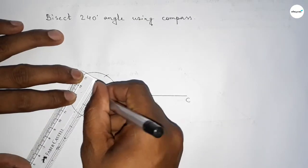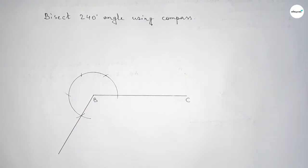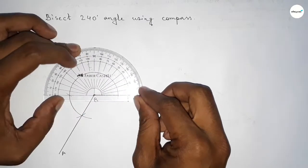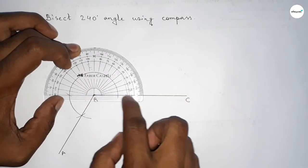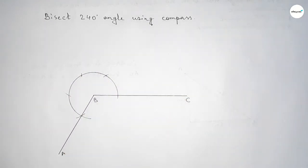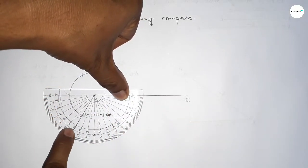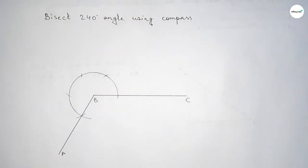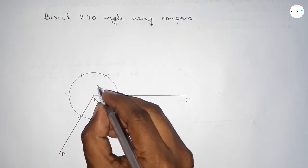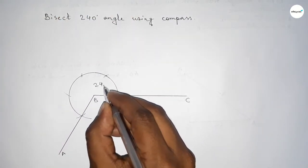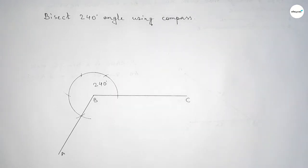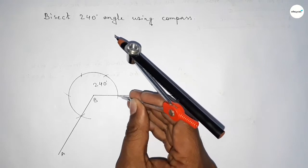Now joining this line to get the 240 degree angle, taking point A here. Checking the angle: this is 180 degrees plus 60 degrees, so 180 plus 60 equals 240 degrees. This is our 240 degree angle. Now we proceed to bisect this angle, putting the compass here and taking a length.